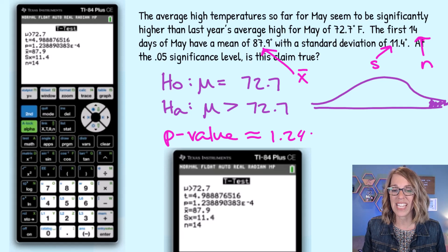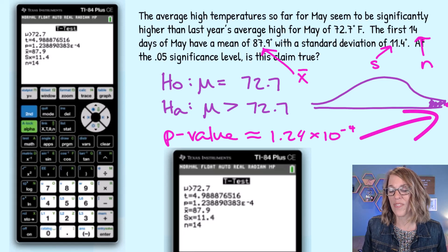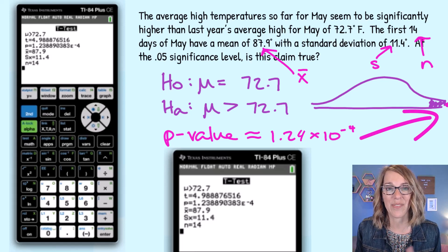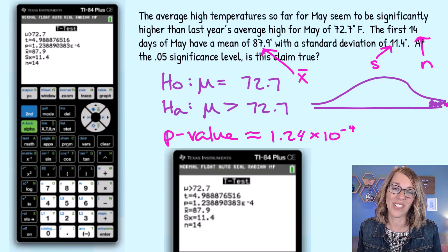1.23, that e is scientific notation, so times 10 to the negative 4. I'll put it over here but it fits well within that rejection region. Easily we found a significant result.